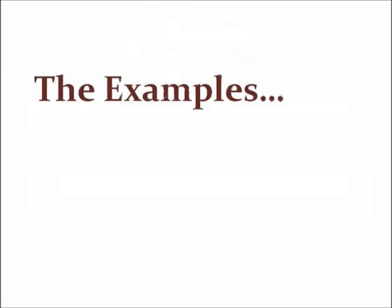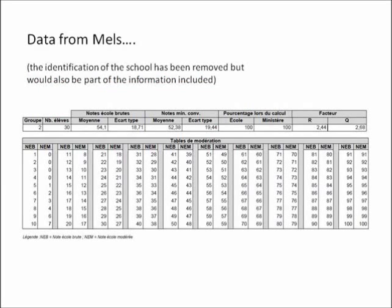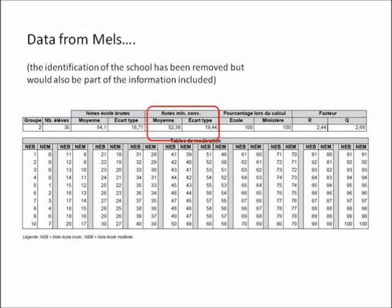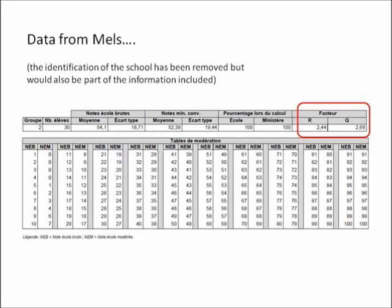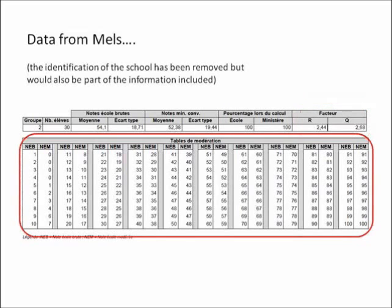Now for some examples of how this procedure affects class marks. Let's look at the charts that MELS passes on to school board evaluation teams. This is actual data for a CST4 class that wrote the exam in June 2012. Each group is identified along with the number of students. The raw school mark average and standard deviation are given, as are the converted exam mark average and standard deviation. MELS also presents a table showing the change in student marks resulting from moderation — the raw mark on the left, and the new moderated mark on the right.